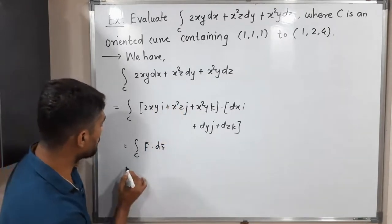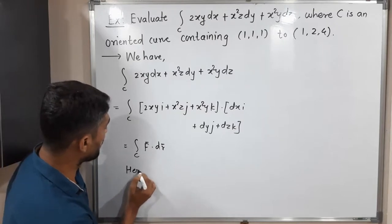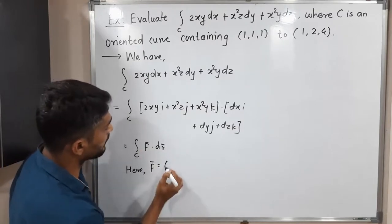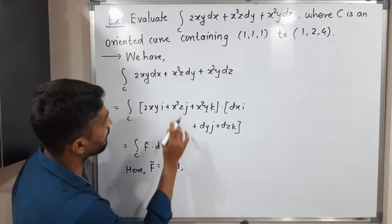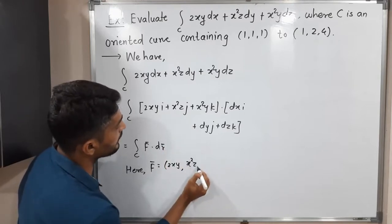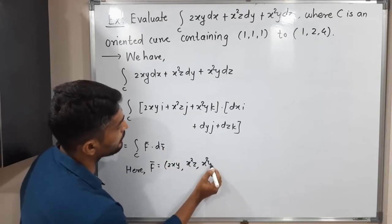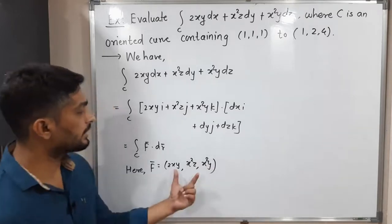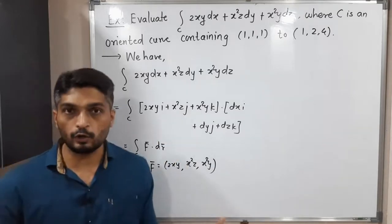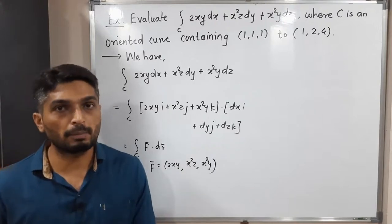So let me mention here F bar is equal to—what is our F bar? 2xy, x²z, x²y. So we can write the same thing in terms of i, j, k or you can write in this way also. So this is our F bar.